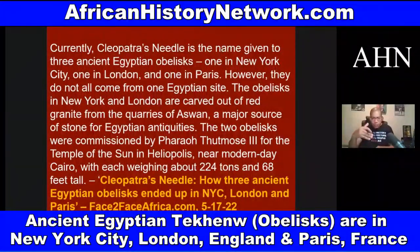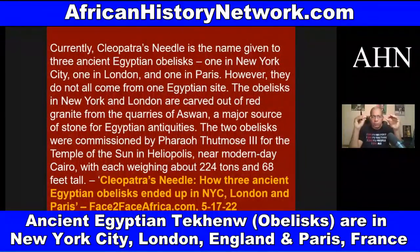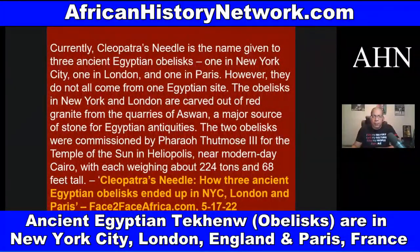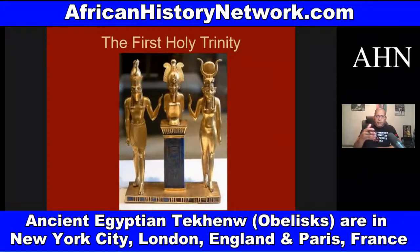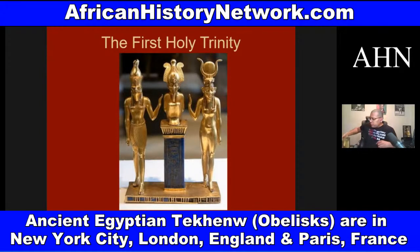There's a good article from face2faceafrica.com called 'Cleopatra's Needle: How Three Ancient Egyptian Obelisks Ended Up in New York City, London, and Paris,' from May 17th, 2022. Once again, this was Egypt of the West — our African history is all around us. We have to understand our history to be able to decode it, and when we see these symbols, it reconnects us to our African self.